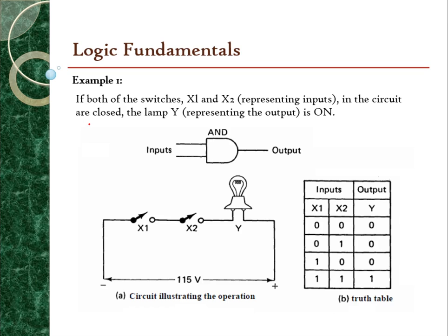Now we look at example one. If both switches X1 and X2 representing the inputs are closed, the lamp Y representing the output is on. From this statement we can see that the switches are organized in a series circuit, because both switches must close for the lamp to turn on. Therefore, this is an AND gate. This is the truth table based on these two inputs — you can relate the circuit illustration to the AND gate operation.